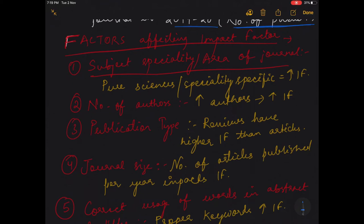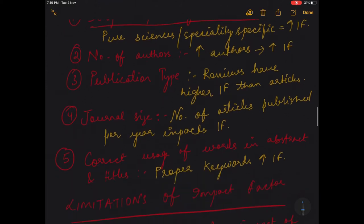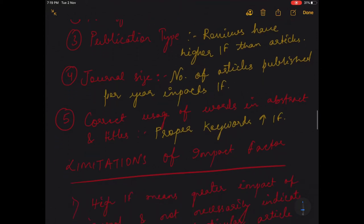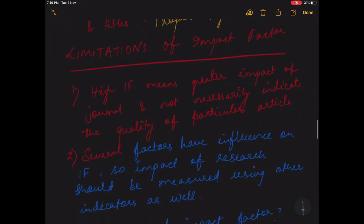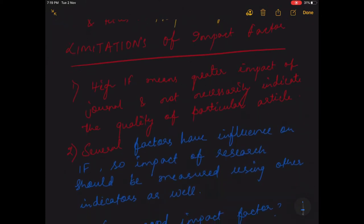Now publication types: the reviews have a higher impact factor than original research articles or other articles. The journal size, that is the number of articles published per year, impacts the IF. And correct use of the words in the abstract and titles, that is the proper keywords, will give rise to high impact factor. Now coming to what are the limitations of impact factor.